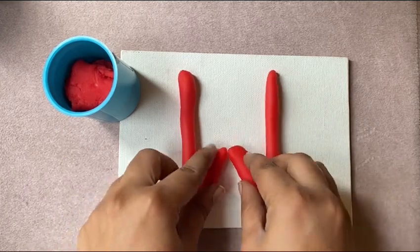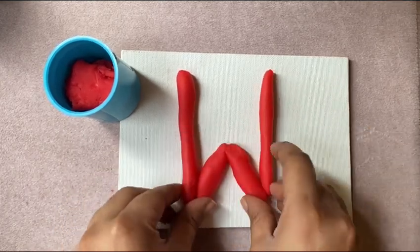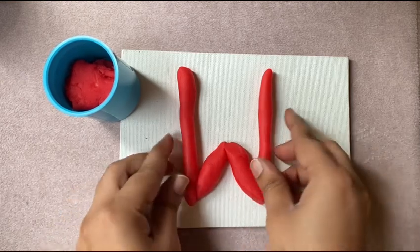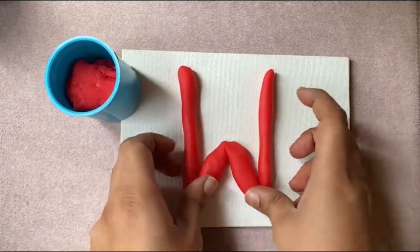Like I'm doing here, and put it in a slanting line form. This makes the alphabetical letter W.